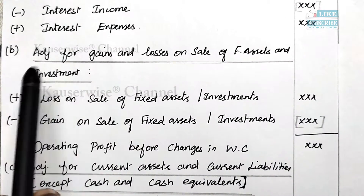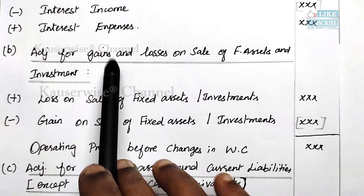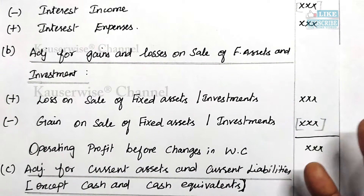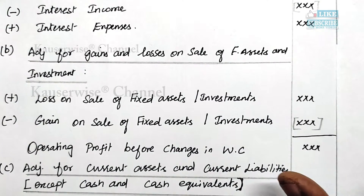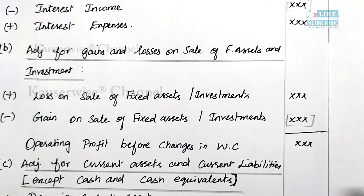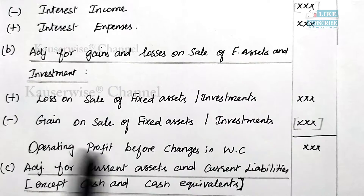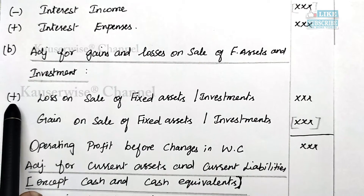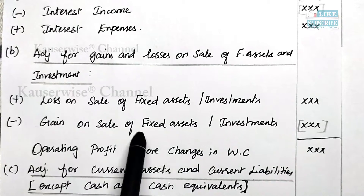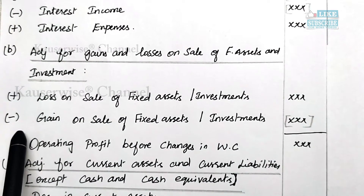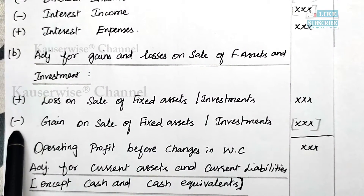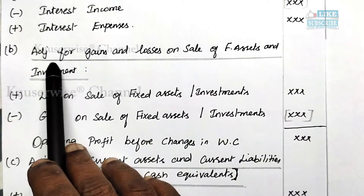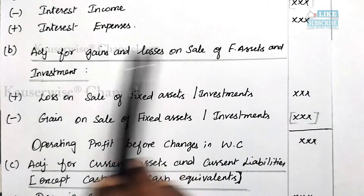Now let us see the second adjustment: adjustment for gains or losses on sale of fixed assets and investments. Sale of assets or investments is a non-operating transaction. When you sell any asset or investment, there will be chances of profit or loss. In case of a loss, simply add it back because it is a non-operating expense. In case of a gain on sale of asset or investment, simply subtract it because it is a non-operating income.